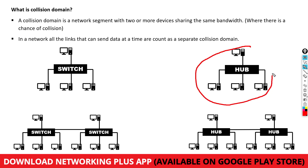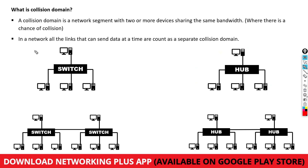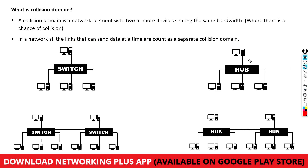All devices connected to a hub count as one collision domain. Here is a simple formula to identify the number of collision domains in a network: all the links that can send data at the same time each count as a separate collision domain. In a hub, only one device can send data at a time, so all devices connected to the hub count as a single collision domain.